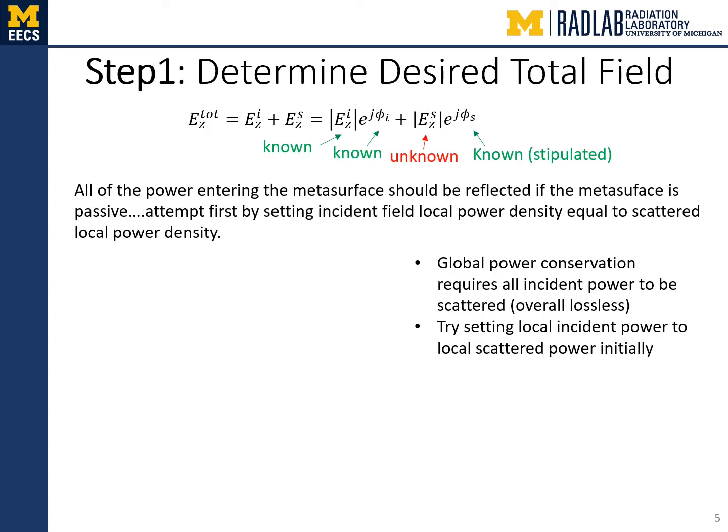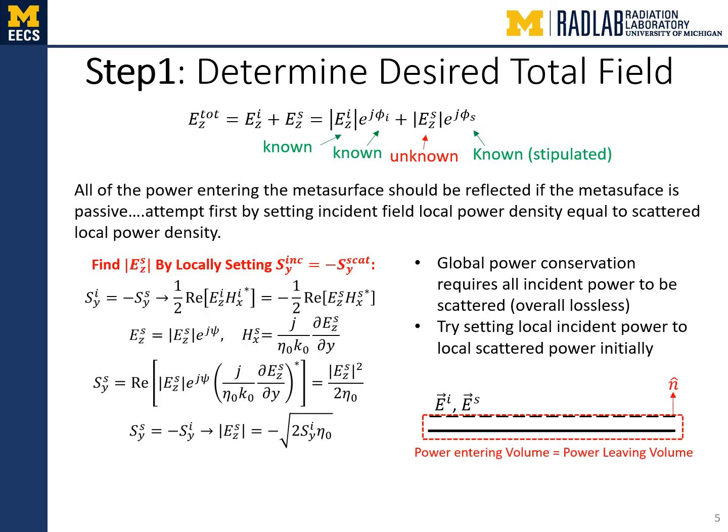In step one, we determine the desired total field. The total field can be written as the summation of the incident field and the scattered field. The incident field is known from the specification of the feed — in this case, the field radiated by an infinite line source. The scattered field phase is stipulated; only the amplitude remains to be determined. Since we desire a lossless and passive metasurface, all the power entering the closed volume surrounding the metasurface should leave. Thus, we may initially find the scattered field amplitude by matching locally the power density at each point, leading to an expression for the scattered field amplitude similar to that of a plane wave.